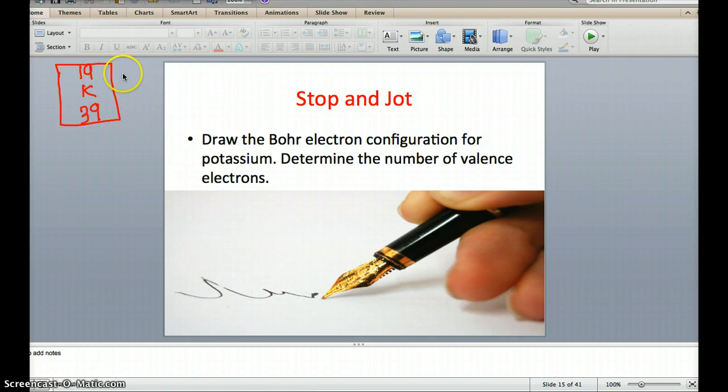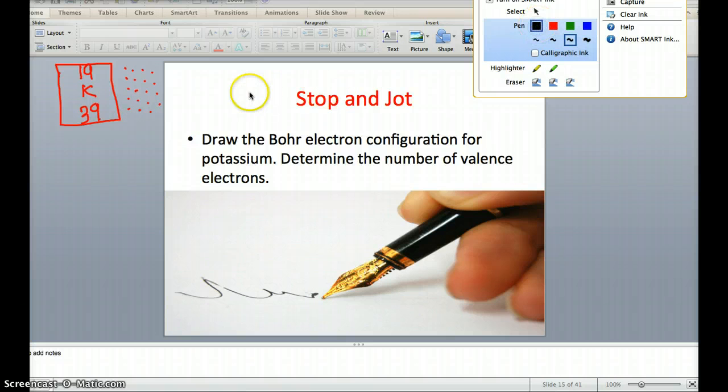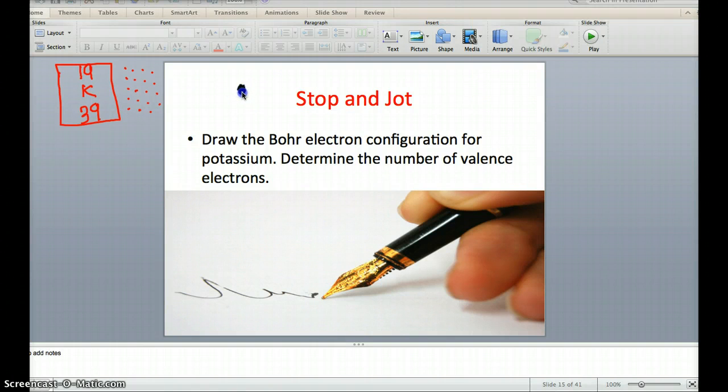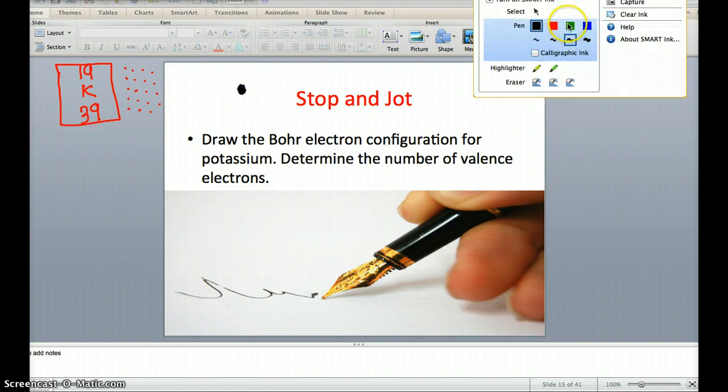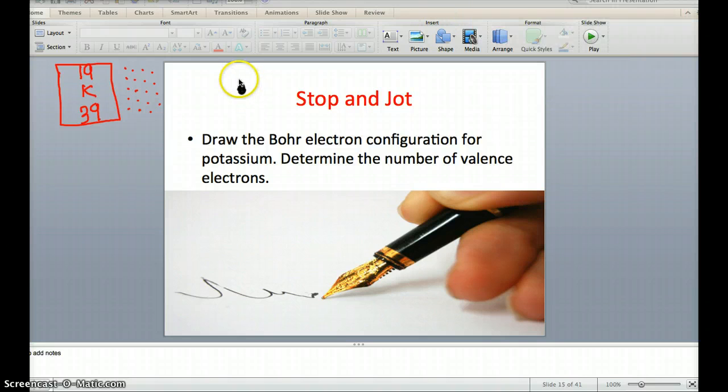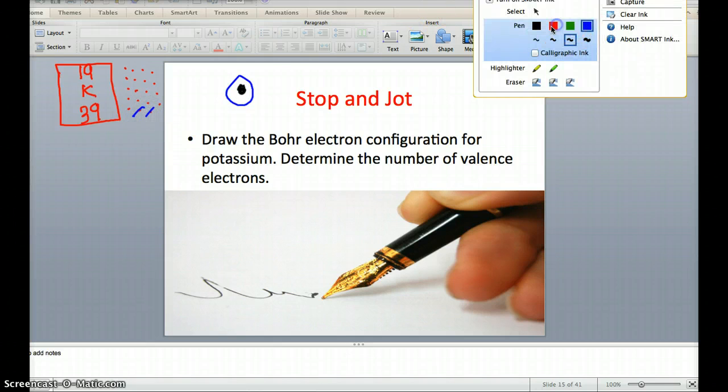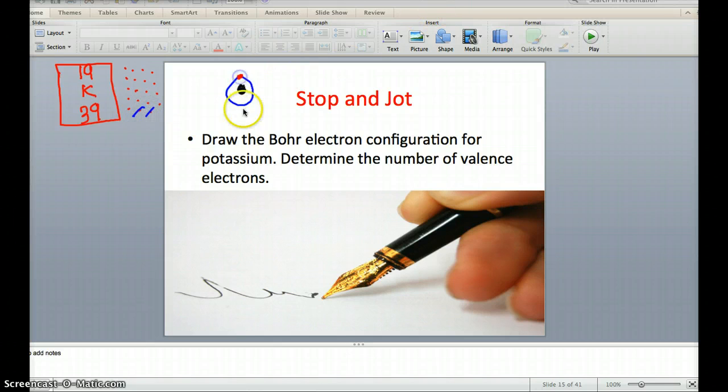That means we have 19 electrons. So, let's give it a shot. We have our nucleus in the center and our first orbital shell, which fits two of our electrons.